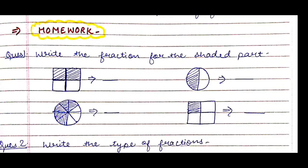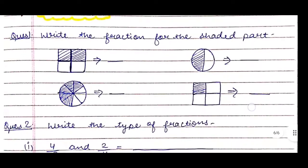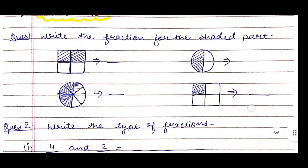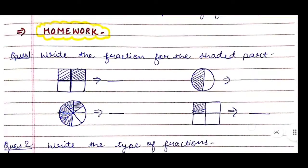Students will answer these questions, and then we will give them some homework. The last part is homework, and it is very important to give them homework so they can practice at home. The first homework question is: write the fraction for the shaded part — you can draw various shapes, shade some parts, and students will write the fraction.